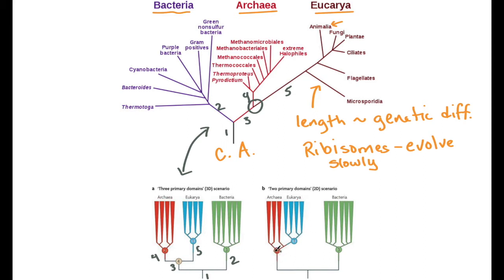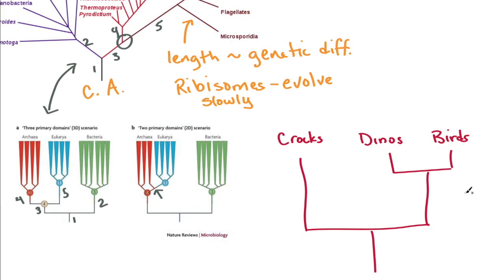So what this means is that the archaea evolved and started to differentiate before the eukaryotes came about. Okay, so I've drawn out here an example that might be more familiar.